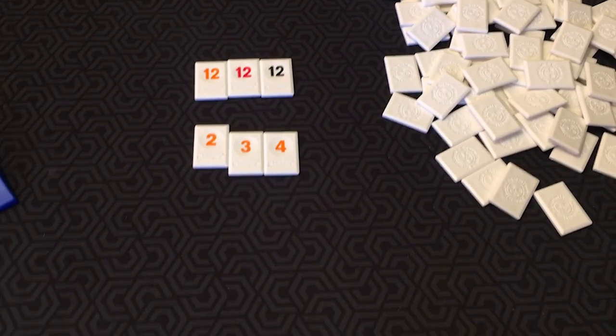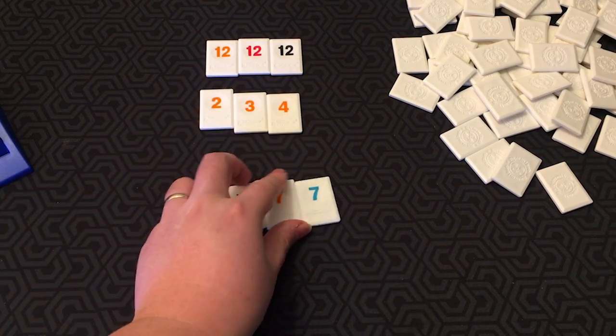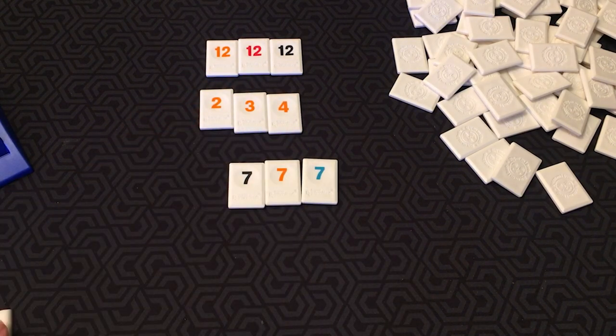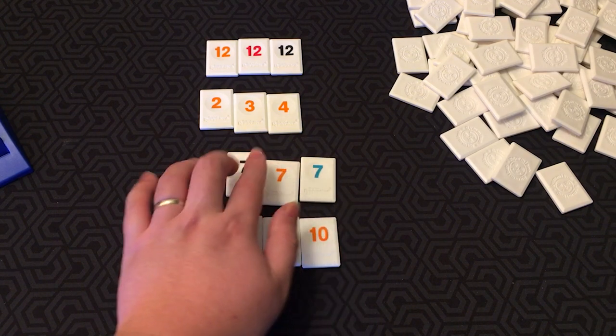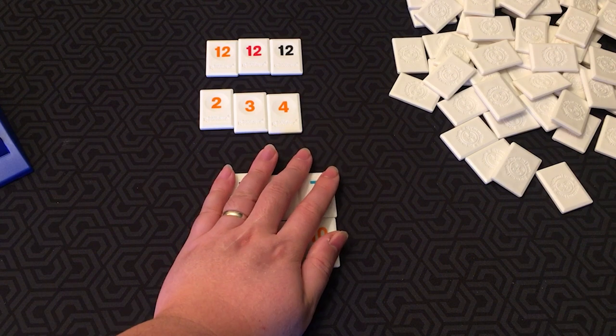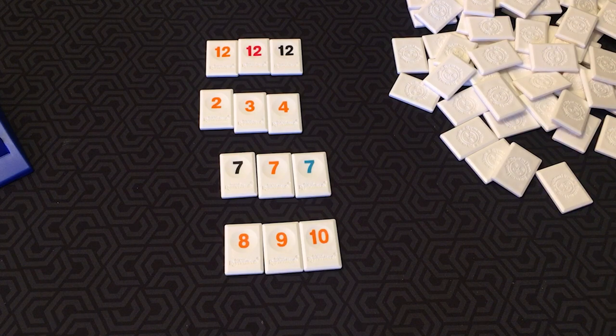Here's an example of an initial meld. We could have, let's say, a group of sevens, which would be 21 points, and then a run of 8, 9, 10. That would be 27, 48 points. So if you place this all at once, that would be your initial meld. You have to play an initial meld before you can build onto other sets on the table.